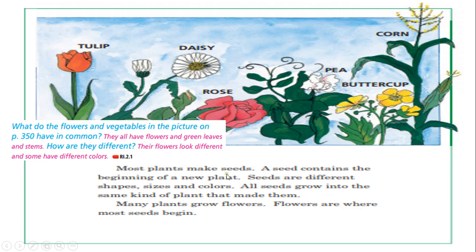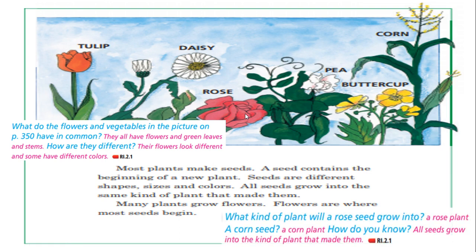Most plants make seeds. A seed contains the beginning of a new plant. Seeds are different shapes, sizes, and colors, according to the type of plant the seed came from. All seeds grow into the same kind of plant that made them. Many plants grow flowers, and flowers are where most seeds begin. In the daisy, where are we going to find the seeds? Exactly — in the middle. What kind of plant will a rose seed grow into? Another rose plant. What about a corn seed? Another corn plant. All seeds grow into the kind of plant that made them.